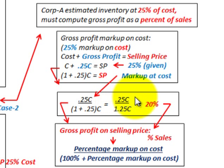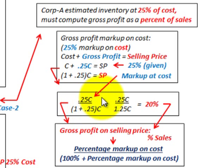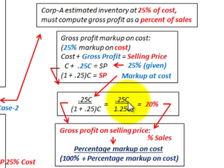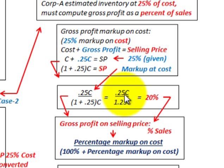To find gross profit as a percentage of sales, we take gross profit — which is 25% (0.25) of cost — and divide it by the selling price of 1.25. So 0.25 ÷ 1.25 = 20%. Our gross profit as a percentage of the selling price is 20%.